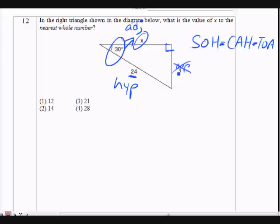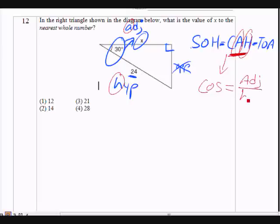So we have adjacent and hypotenuse. Which one do we use? Well, adjacent starts with A, hypotenuse starts with H. So which one has A and H? It's going to be cosine. Cosine has that A and has that H. So the C means cosine. Cosine is equal to adjacent over hypotenuse.